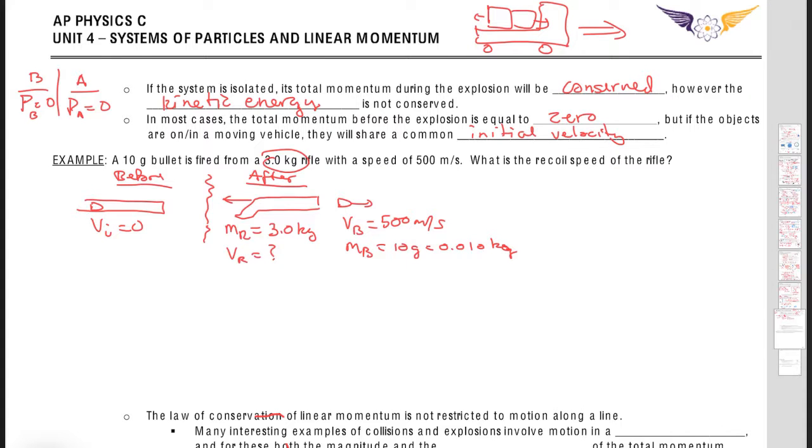Right, and so we want to know what is the velocity of the rifle afterwards. And so if we set up our equation, it's like we're saying mass of the bullet plus mass of the rifle times our common initial velocity is going to equal the mass of the bullet times the velocity of the bullet plus the mass of the rifle times the velocity of the rifle.